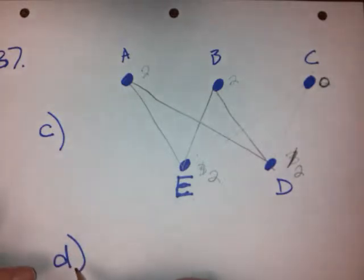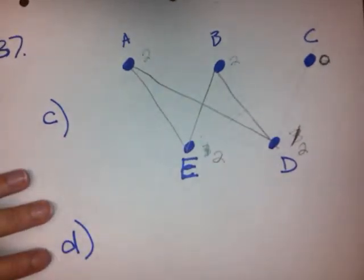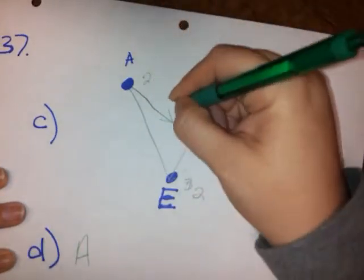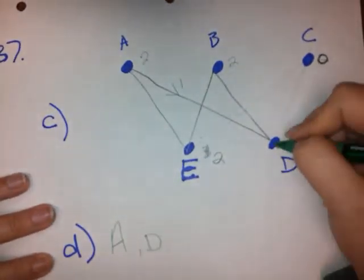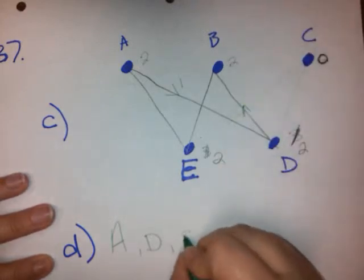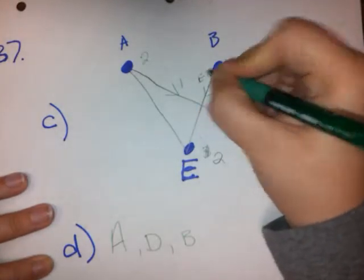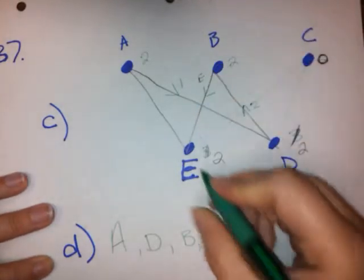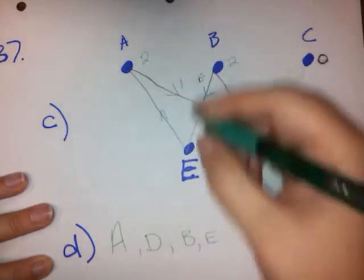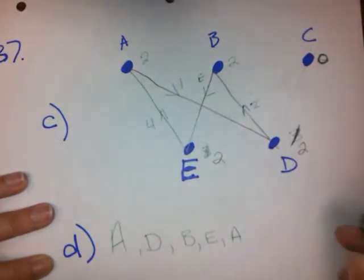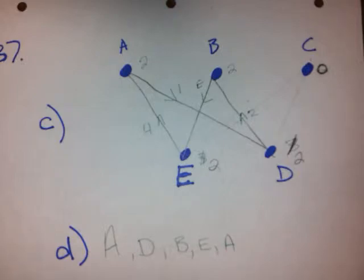Now we have to write down an Euler circuit for part D. We do this with arrows. Let's start at A — we go to D, then D to B, then B to E, and then E back to A. That gives us four edges, and that gives us our Euler circuit. We went on each edge once and only once.